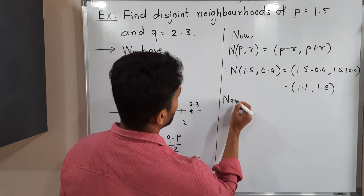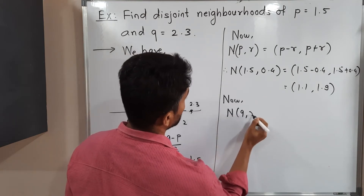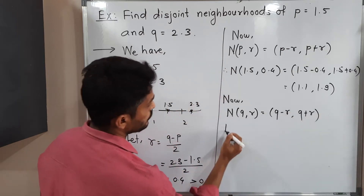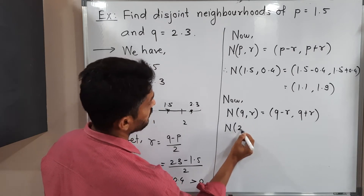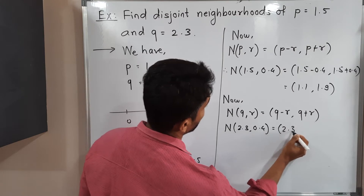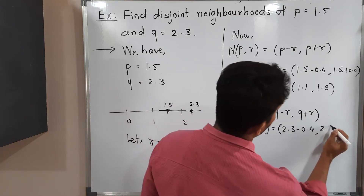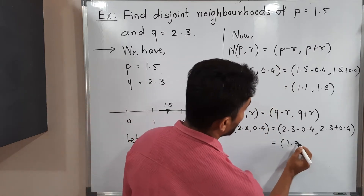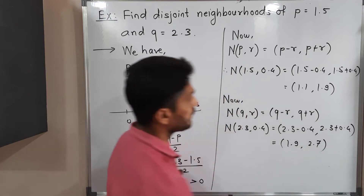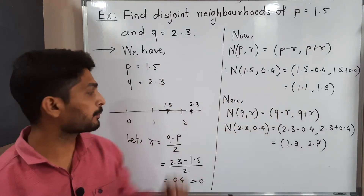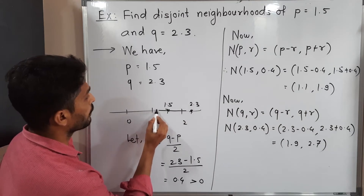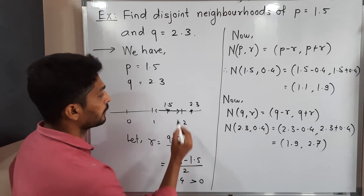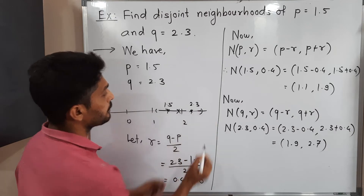Now I will find the neighborhood of Q with the same radius R. The definition says it is (Q minus R, Q plus R). Therefore, neighborhood of Q = 2.3 with R = 0.4 is (2.3 minus 0.4, 2.3 plus 0.4) = (1.9, 2.7). So neighborhood of 1.5 is (1.1, 1.9) and neighborhood of 2.3 is (1.9, 2.7).